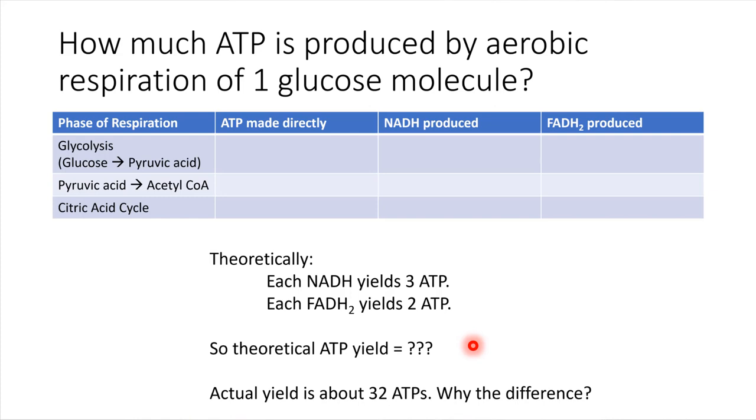So why is the theoretical yield that you calculated here, why is this number different from 32? I've told you at the very beginning of this whole set of lectures that one molecule of glucose gives us about 32 ATPs. That's the actual yield of ATP. So why is there a difference? Why is the theoretical value different from the actual value?